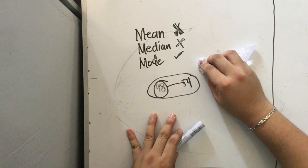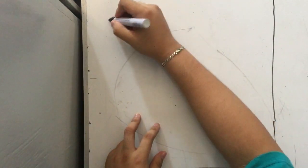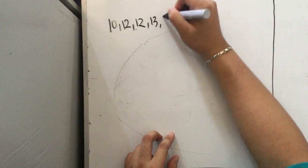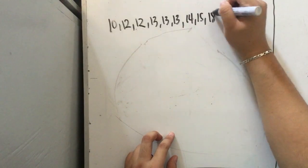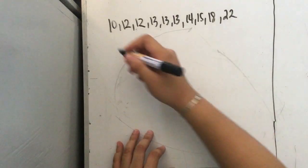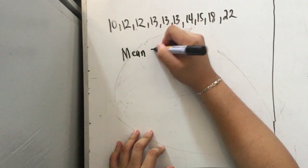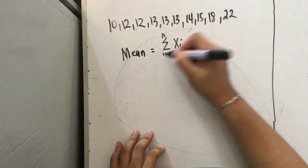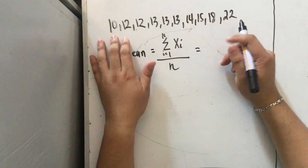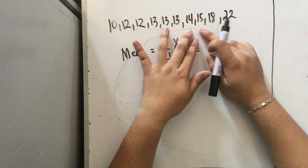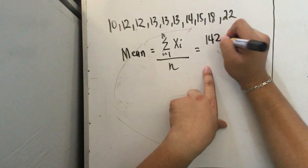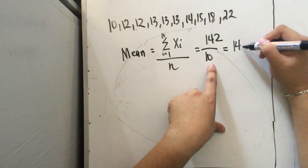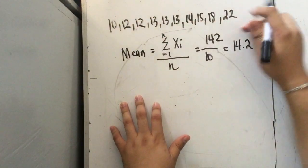For a better understanding, let's look at examples. Given the data: 10, 12, 12, 13, 13, 13, 14, 15, 18, 22 — to get the mean, we get the summation of all data values over the total number of observations. So: 10 + 12 + 12 + 13 + 13 + 13 + 14 + 15 + 18 + 22 = 142, divided by the total number of observations which is 10. So 142 divided by 10 equals 14.2. That is the mean.